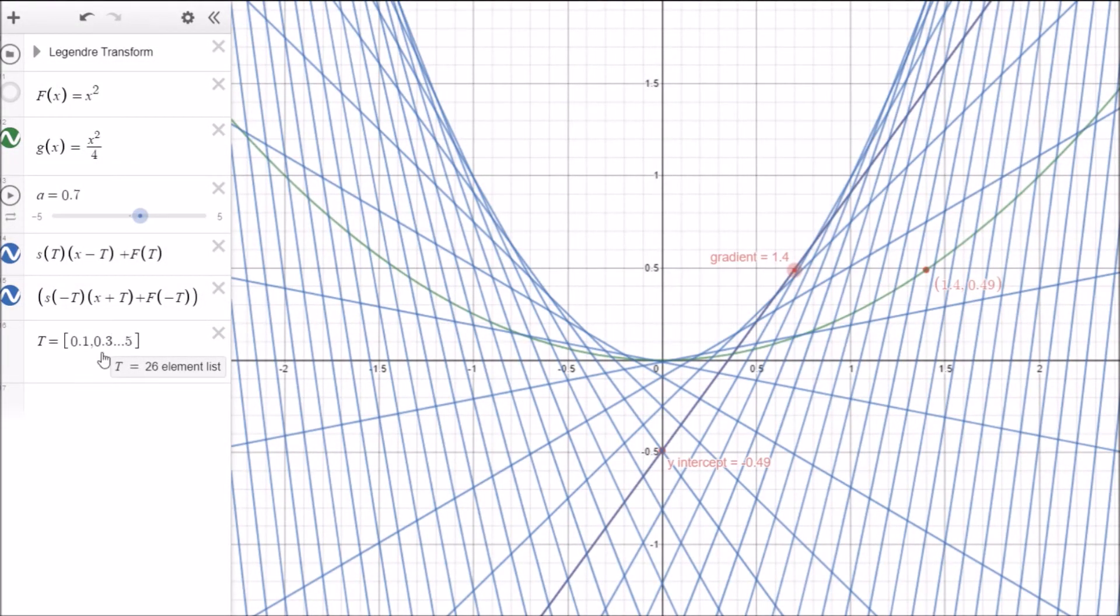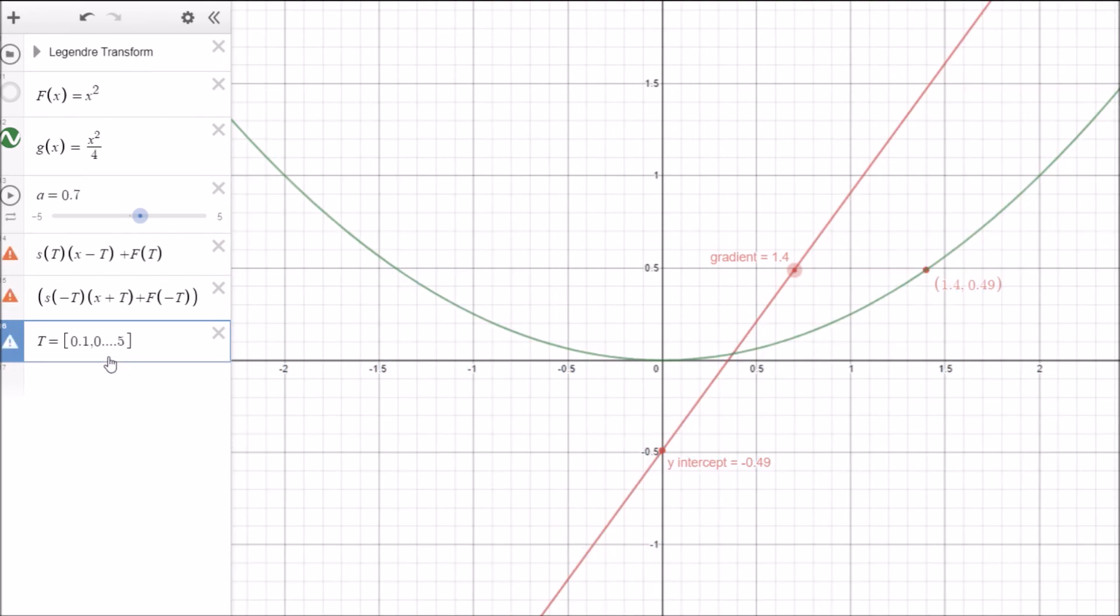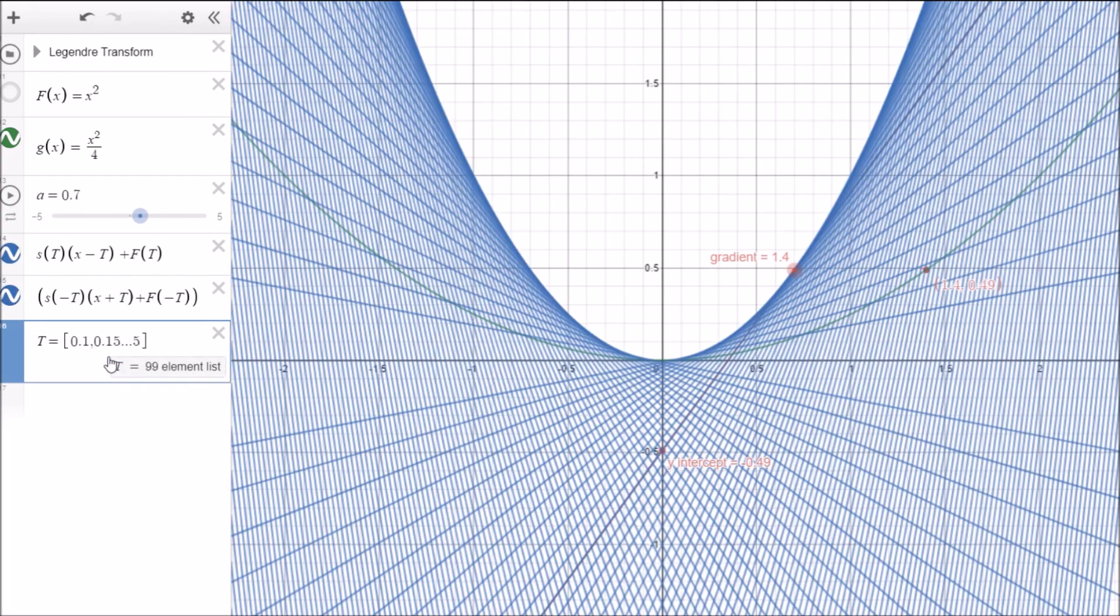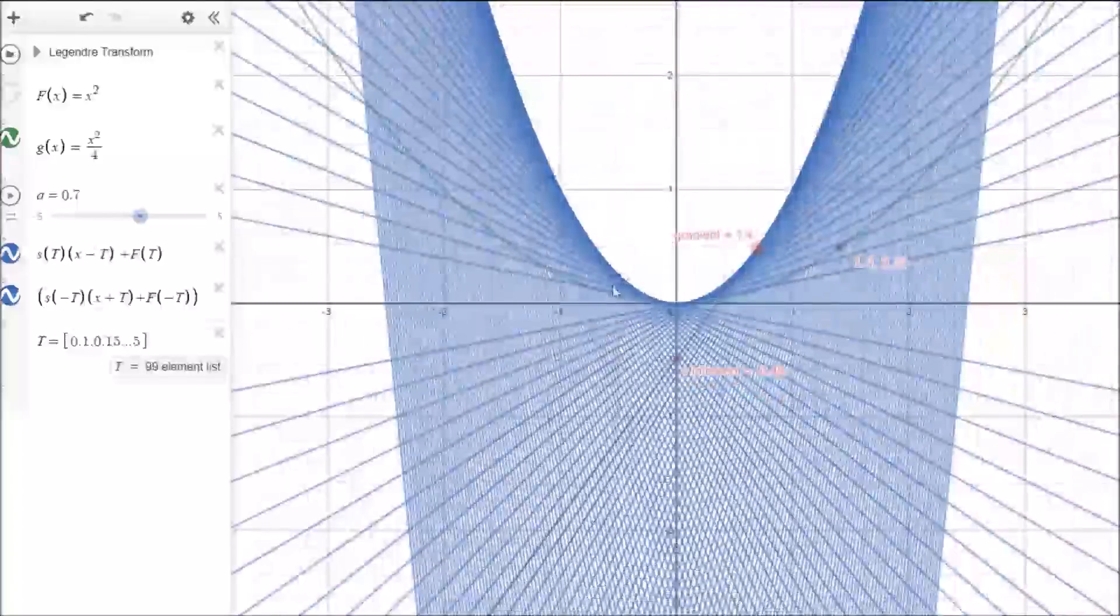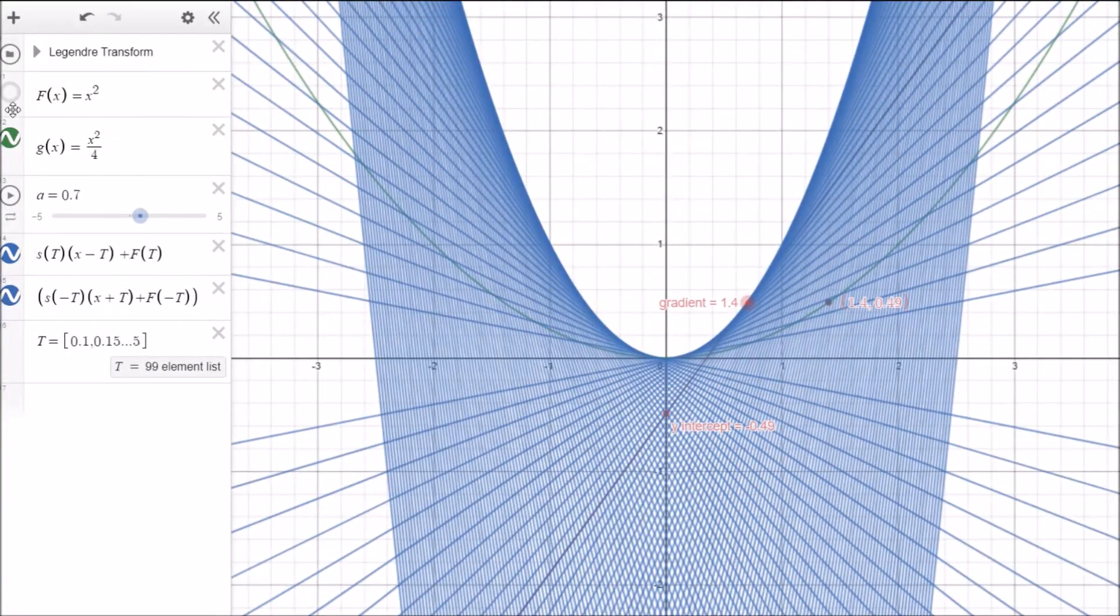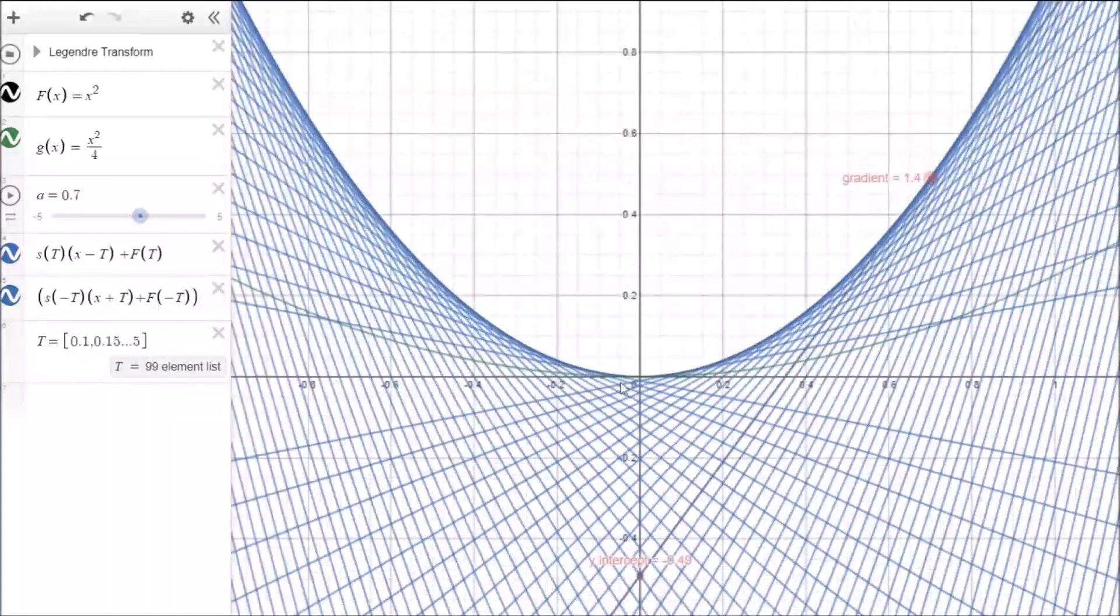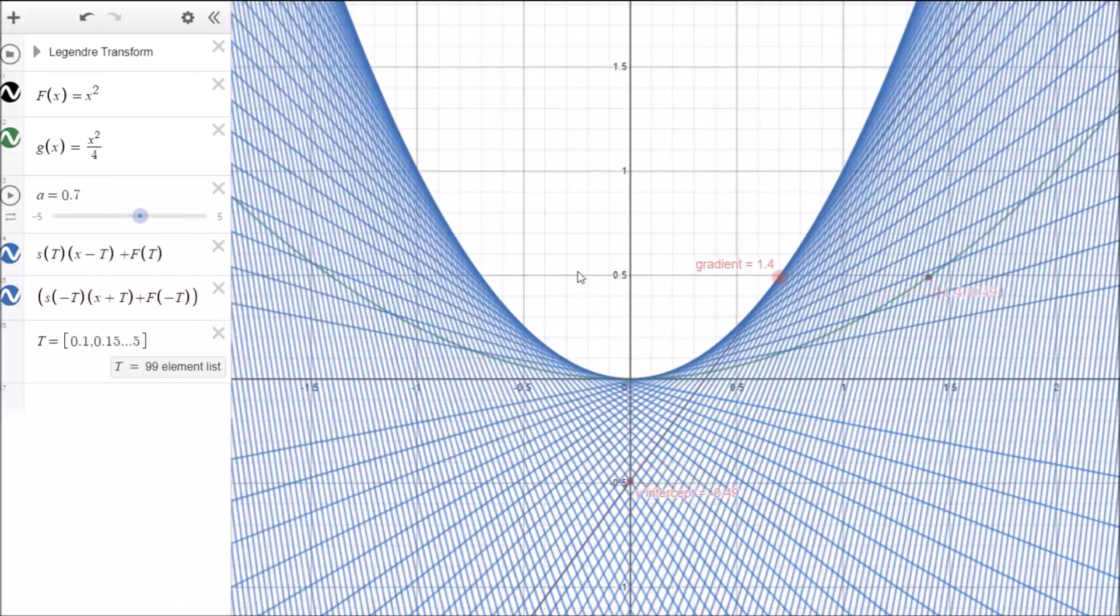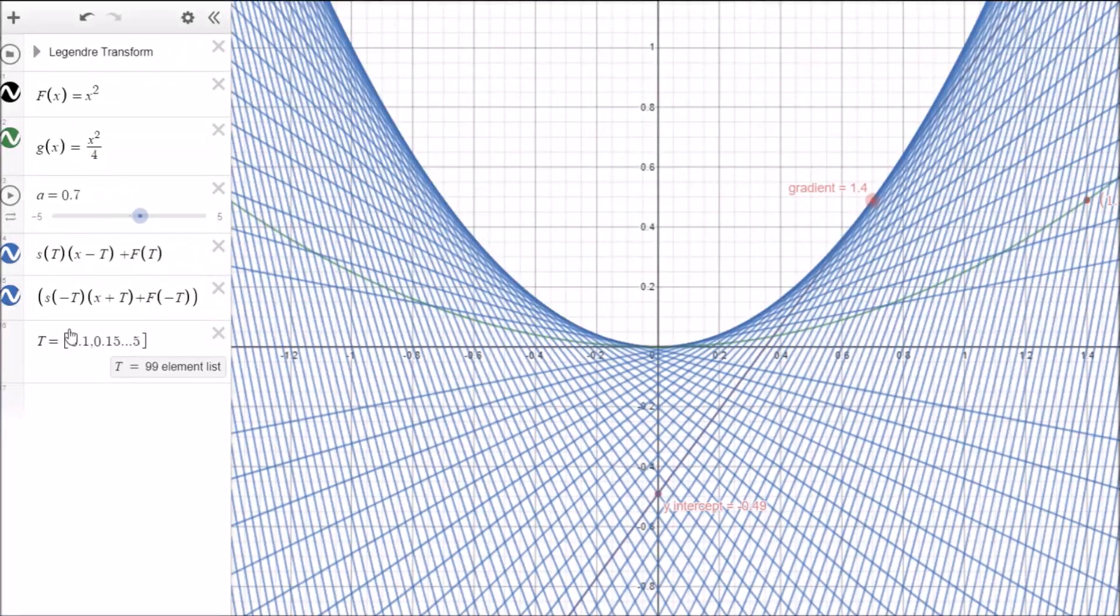So we can adjust this value here and we'll make it 0.2. And you can see we've got more tangent lines here. And again, we can adjust it down to 0.15. So you can see that our y equals x squared curve is starting to appear. And if we put the original curve in, that's it here in black.